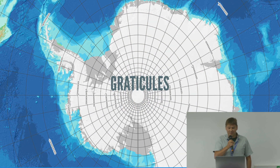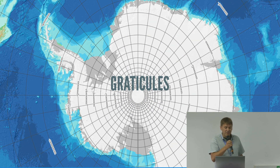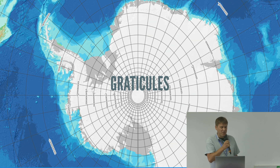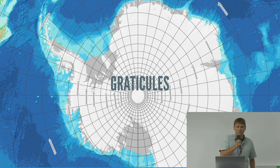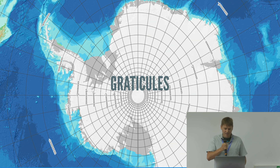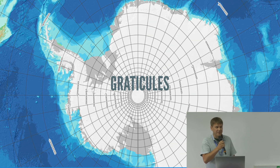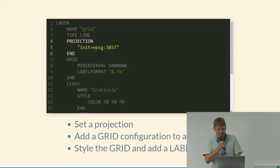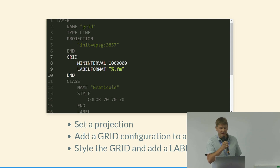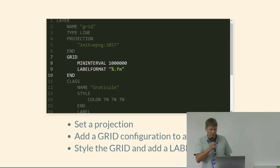This example shows graticules — a grid you can put on top of your data as a reference. In this example it's showing a polar projection with the graticules shown in Web Mercator. Each of your layers can be in different projections while your map has a single projection — MapServer can reproject on the fly as much as needed. The data is coming from another WMS server, so MapServer can serve out WMS but is also a WMS client. For graticules you set your projection and use a grid block where you set your minimum interval and labels.